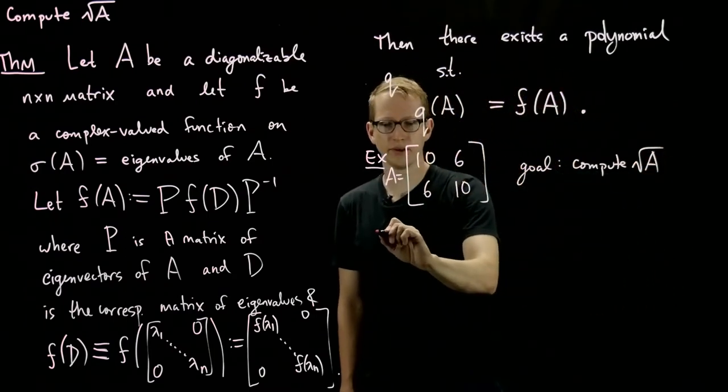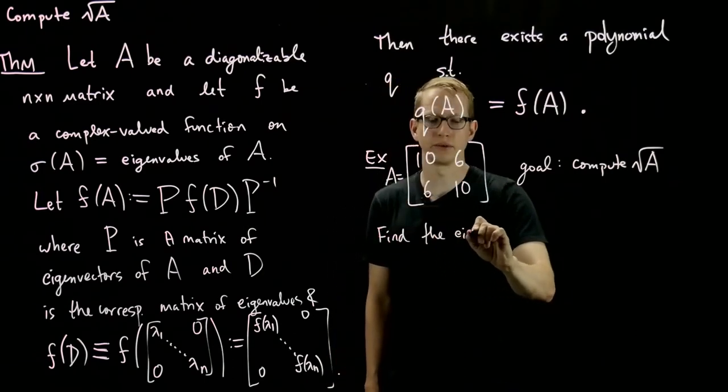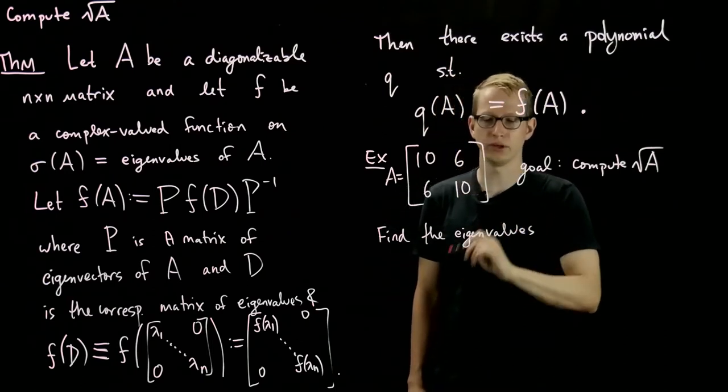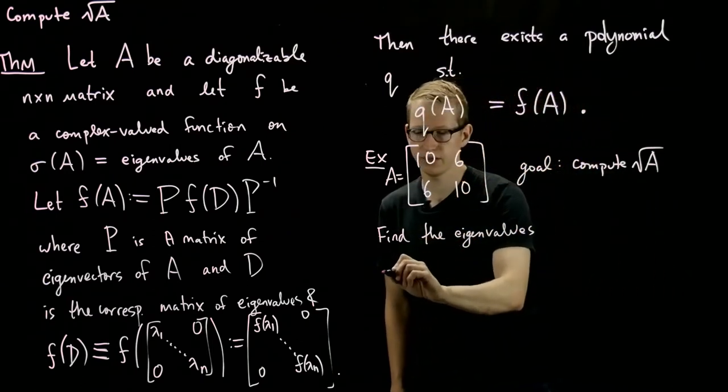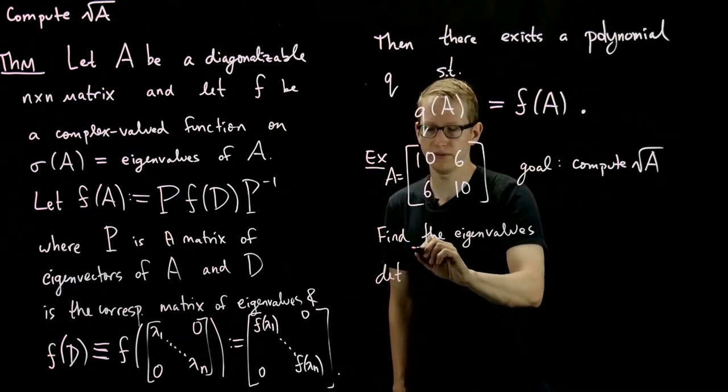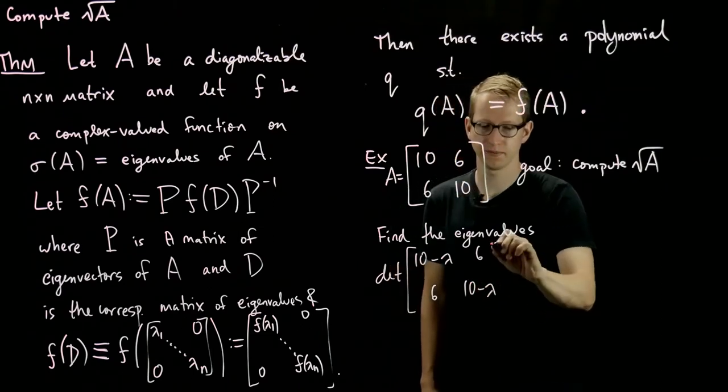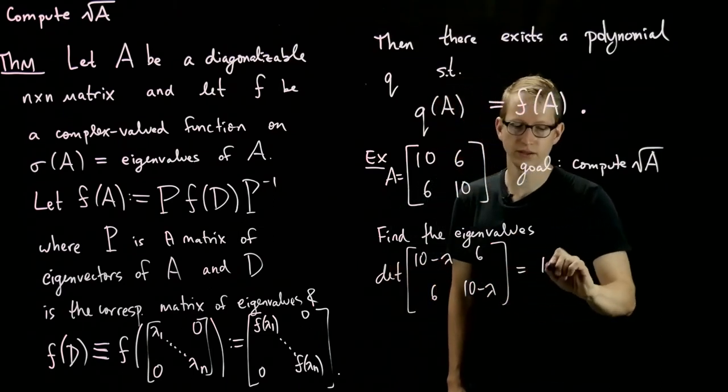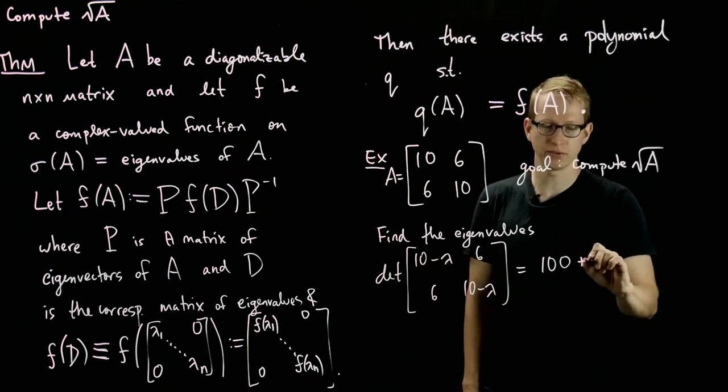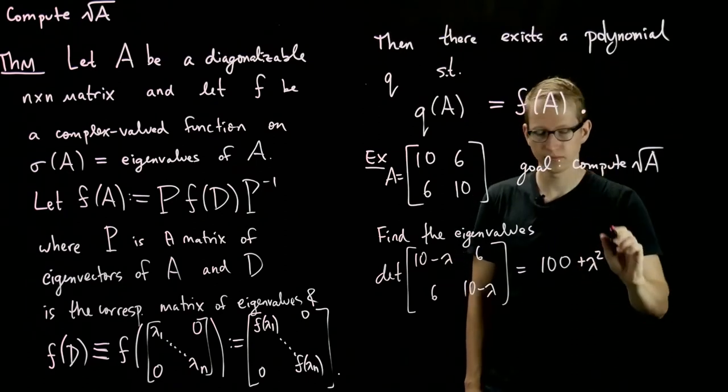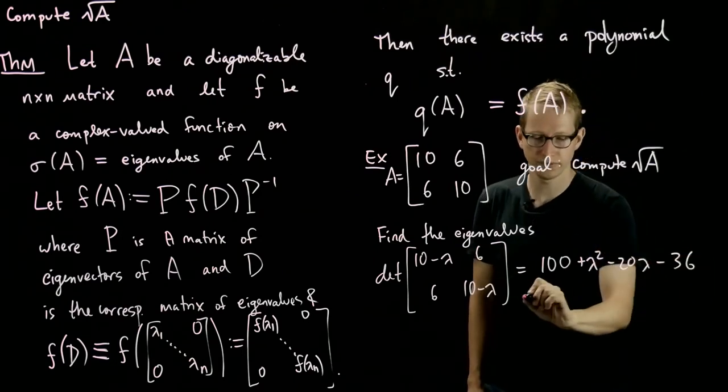So the first step is find the eigenvalues. We'll also review how to do these things. So to find the eigenvalues, compute the determinant of [[10-λ, 6], [6, 10-λ]].